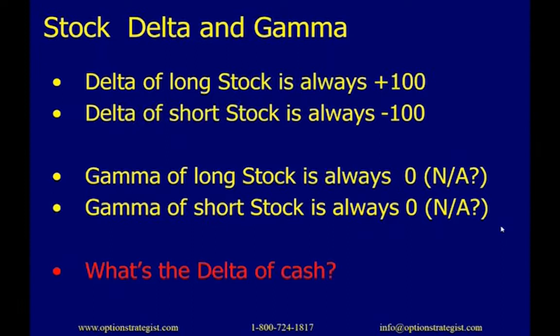The delta of long stock is always 100, and the delta of short stock is always minus 100. The gamma of long stock is always zero — because if delta is always 100, the change in delta is zero (100 minus 100). The gamma of short stock is always zero as well.